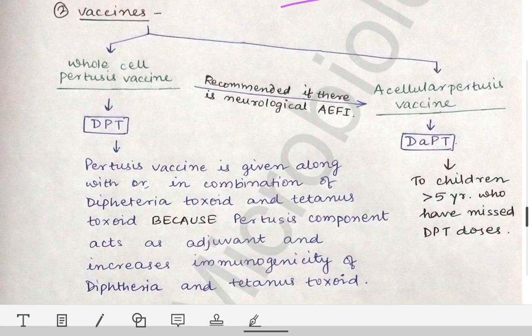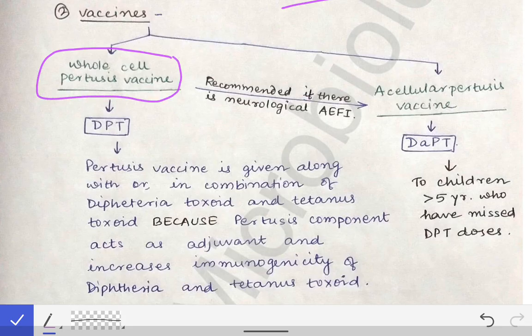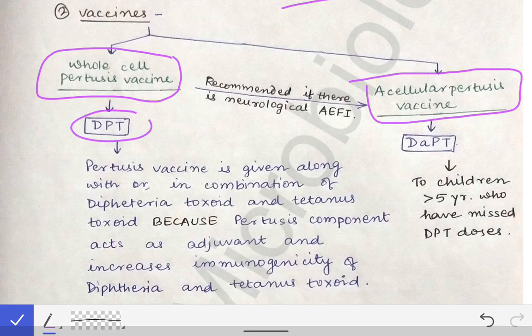There are two types of pertussis vaccines: the whole cell pertussis vaccine and the acellular pertussis vaccine. The whole cell pertussis vaccine is given in DPT, while the acellular pertussis vaccine is given in DaPT.